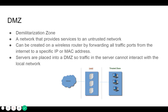Looking at the diagram, the internet — shown by the cloud on the left — is theoretically separated from the trusted zone or local network by a DMZ. Any traffic from the internet trying to get into the local network is first stopped at the DMZ, so it doesn't go directly into the local network.